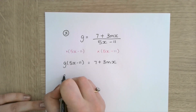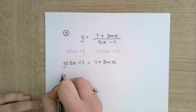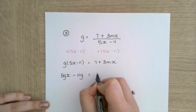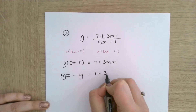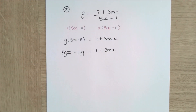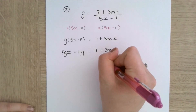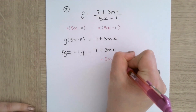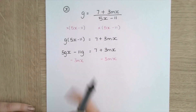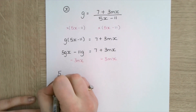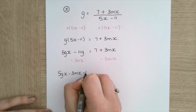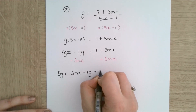I expand my brackets, so I get 5gx minus 11g is equal to 7 plus 3mx. I'm going to get my x's all onto one side, so I'm going to subtract 3mx from both sides. Which leaves me with 5gx minus 3mx minus 11g equals 7.